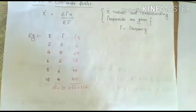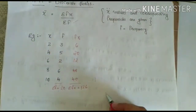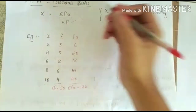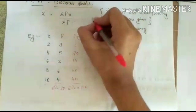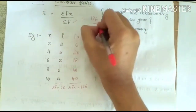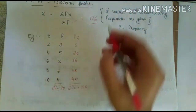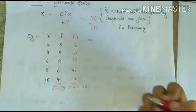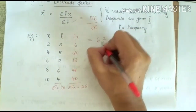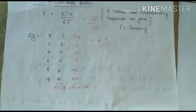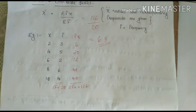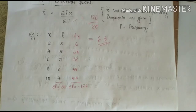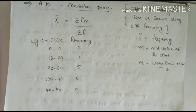Then directly apply the equation: sigma FX divided by sigma F = 126 divided by 20. The answer is 6.3. This is the method to calculate arithmetic mean in discrete series. Next, we are moving on to arithmetic mean in continuous series.